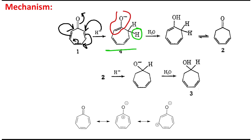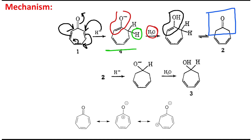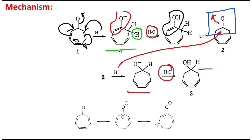The enolate is first protonated by water to give the corresponding enol, and we know this enol can undergo keto-enol tautomerism, producing an isolated ketone — one not in conjugation with any double bond. This ketone can then be reduced by sodium borohydride, since hydride acts as a nucleophile and attacks the carbonyl carbon. After workup, this produces a secondary alcohol.